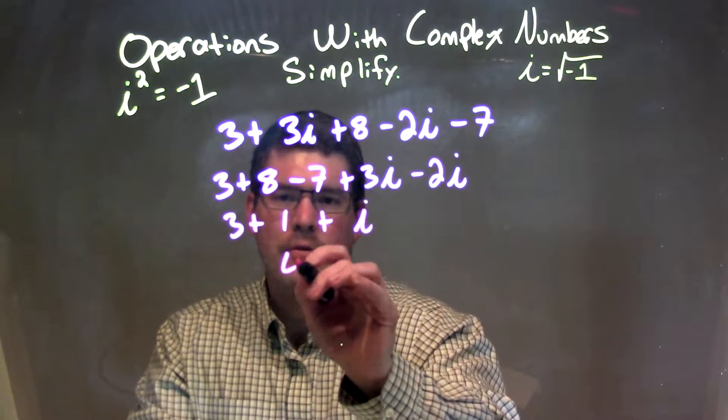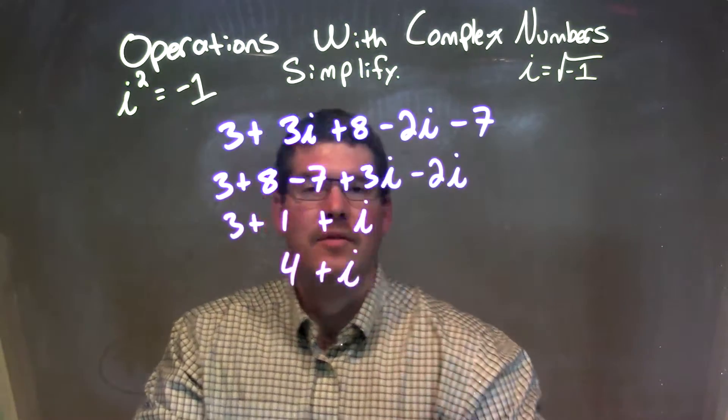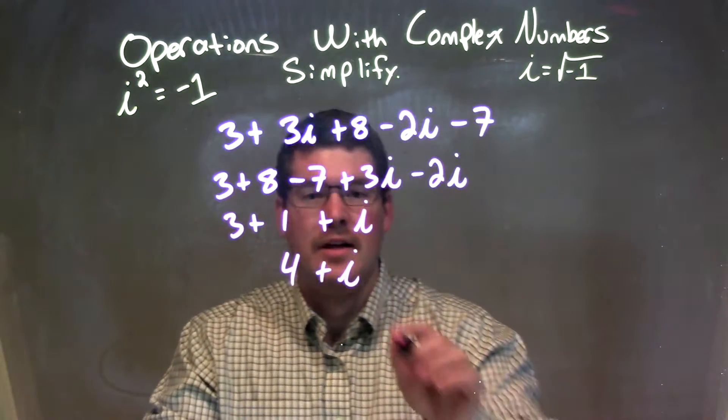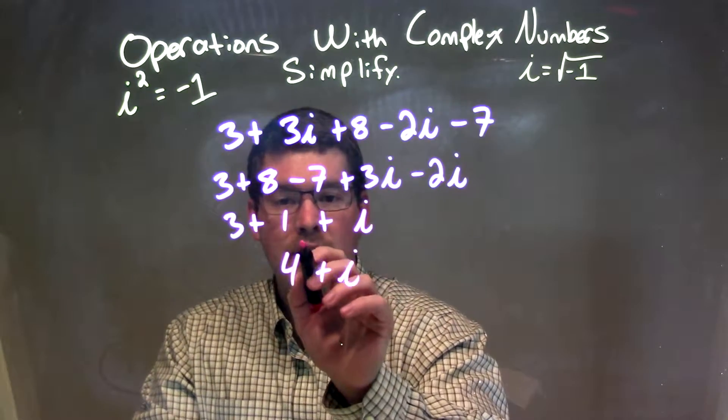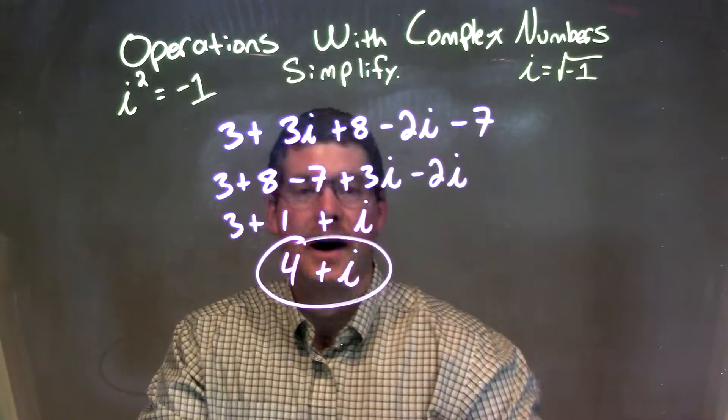And 3 plus 1 is 4, so we have 4 plus i. We've combined our like numbers to get to our final answer, 4 plus i.